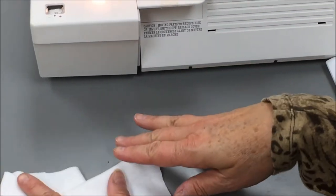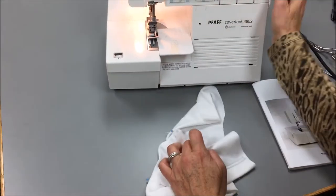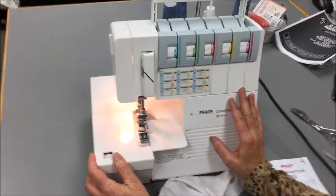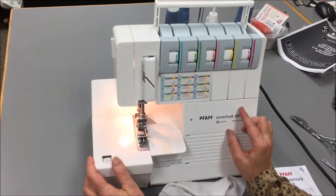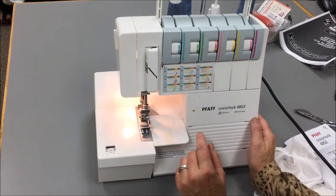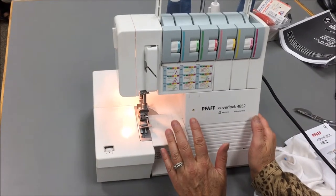Before we show this sample, we're going to talk about the serger and the different important parts. This machine will do lots of different kinds of stitches but we're only going to focus on the cover lock stitch. So let's just talk about some of the basic parts of the machine.